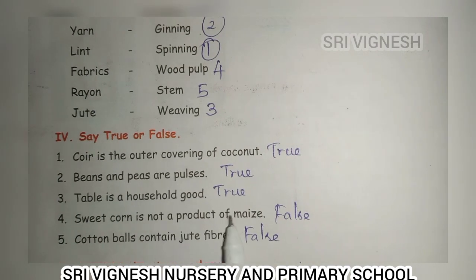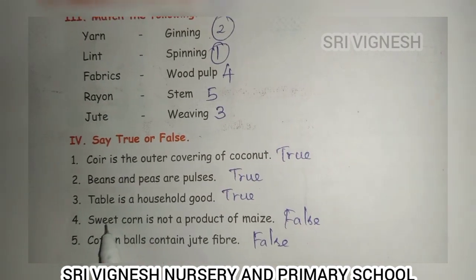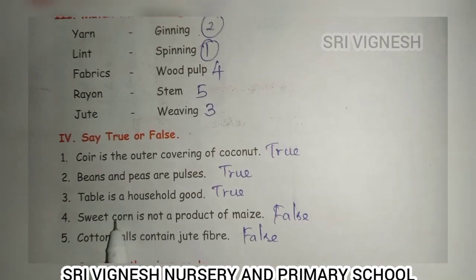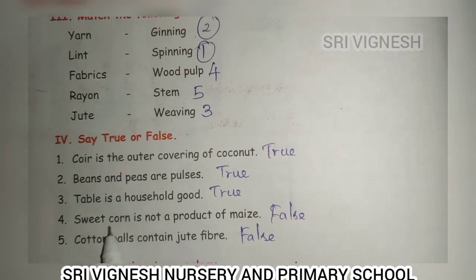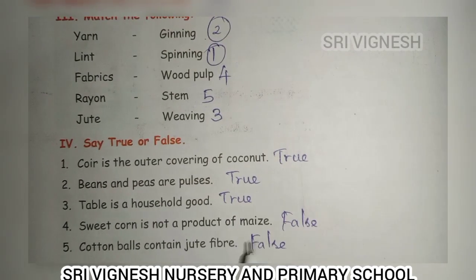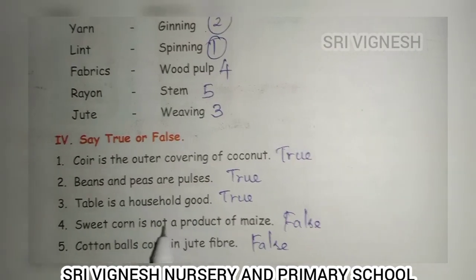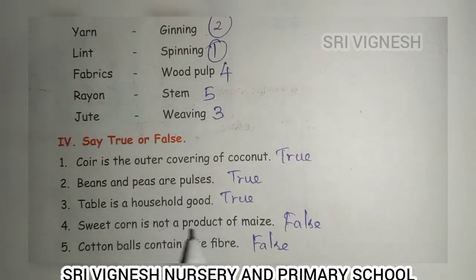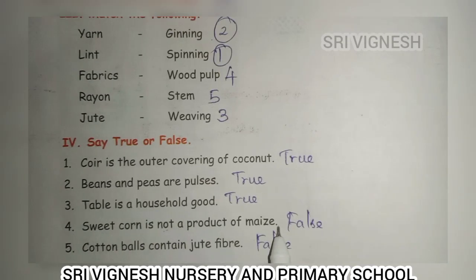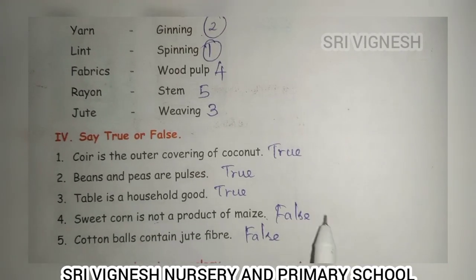Next, sweet corn is not a product of maize. Sweet corn — you can see it goes to the maize, so this is false.